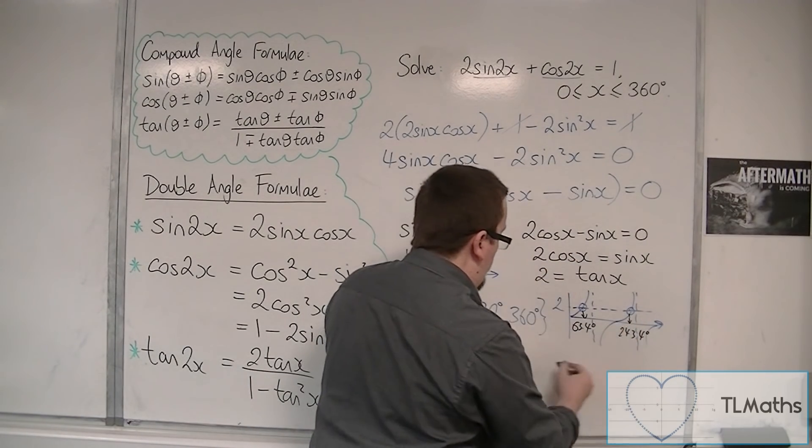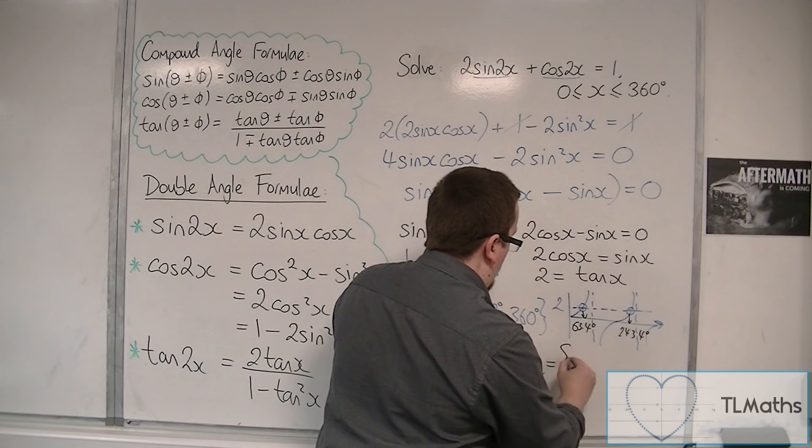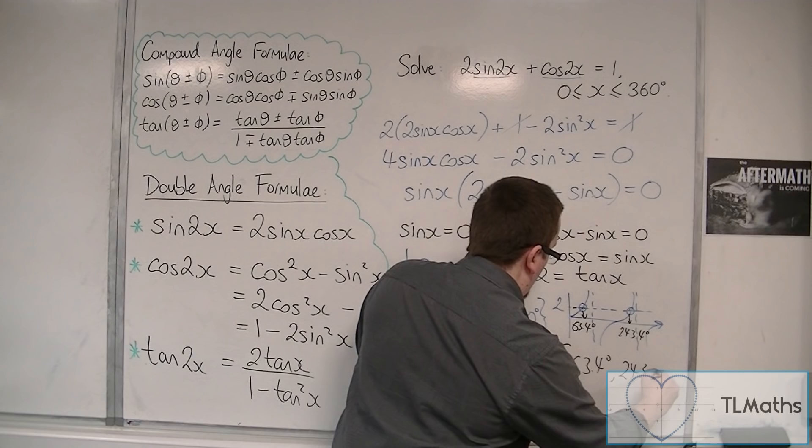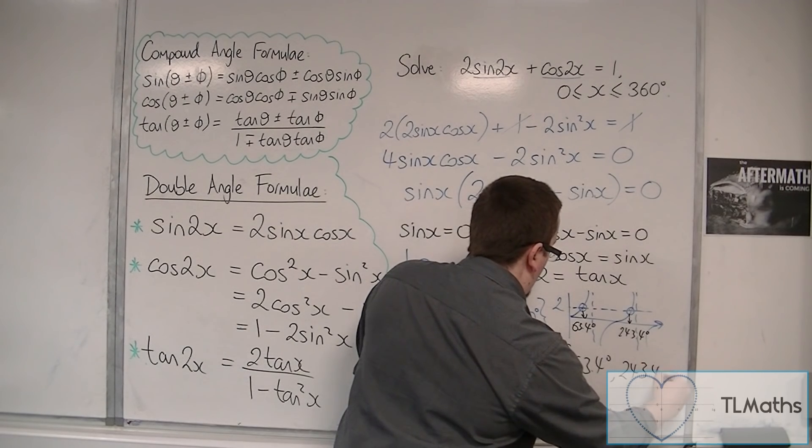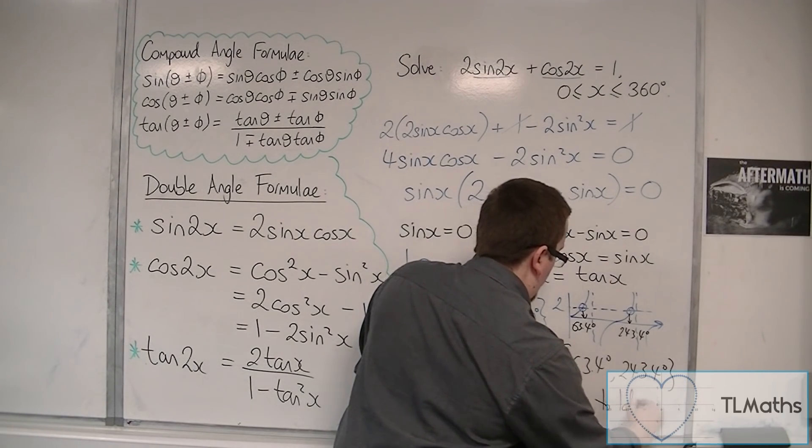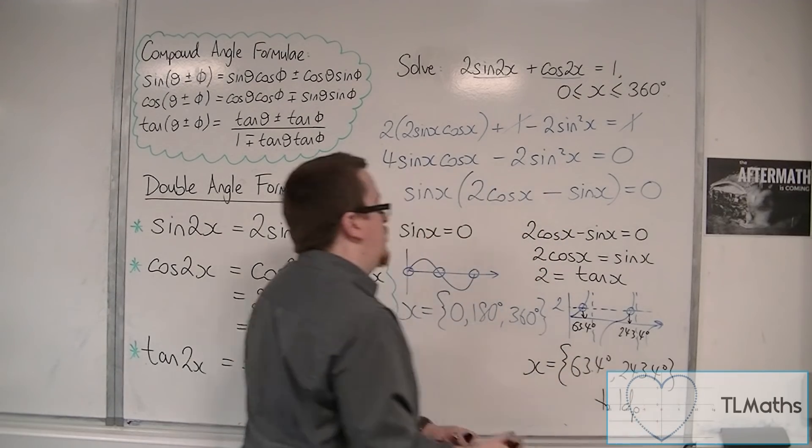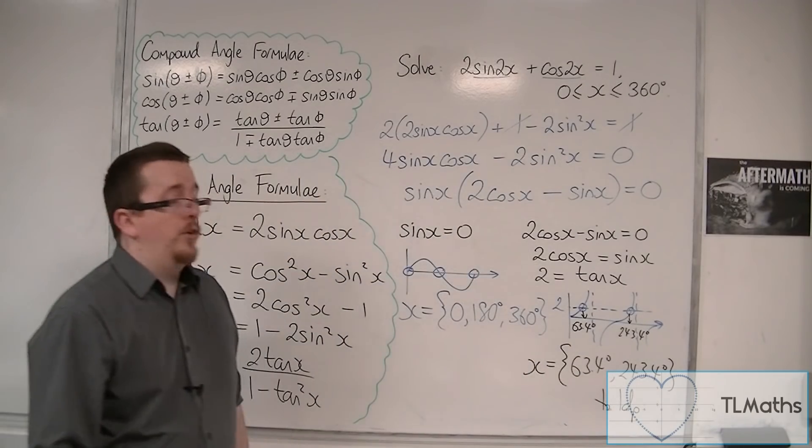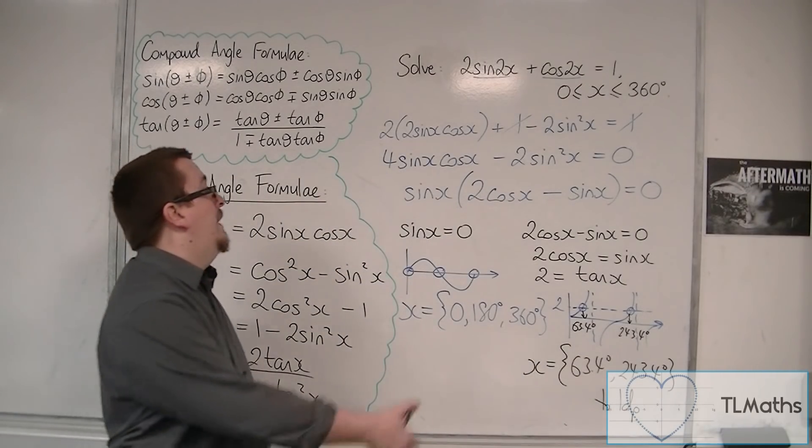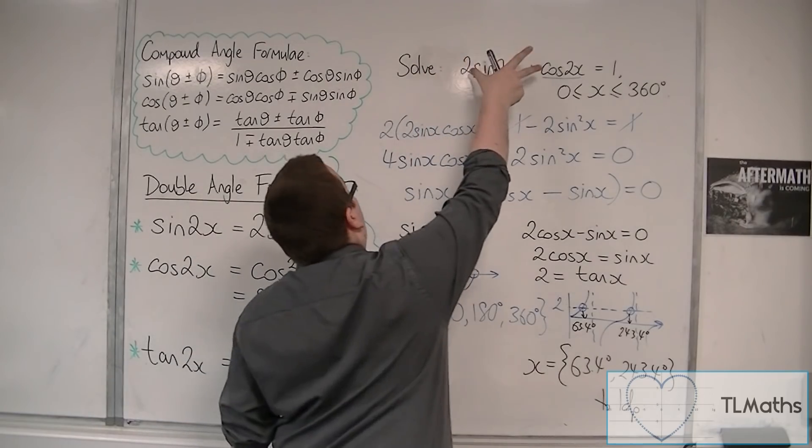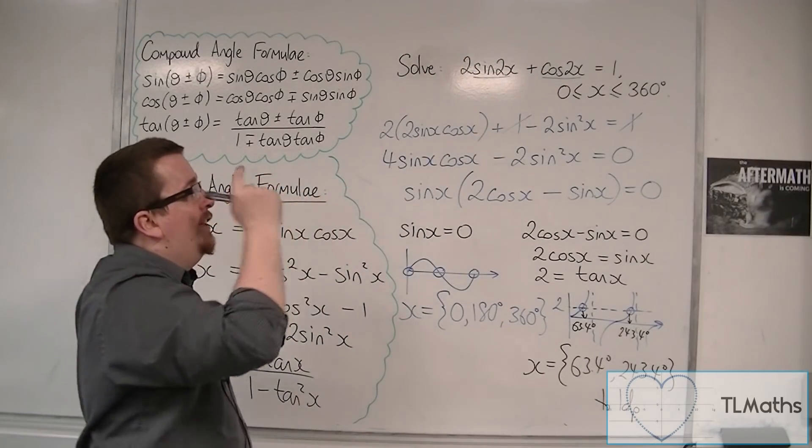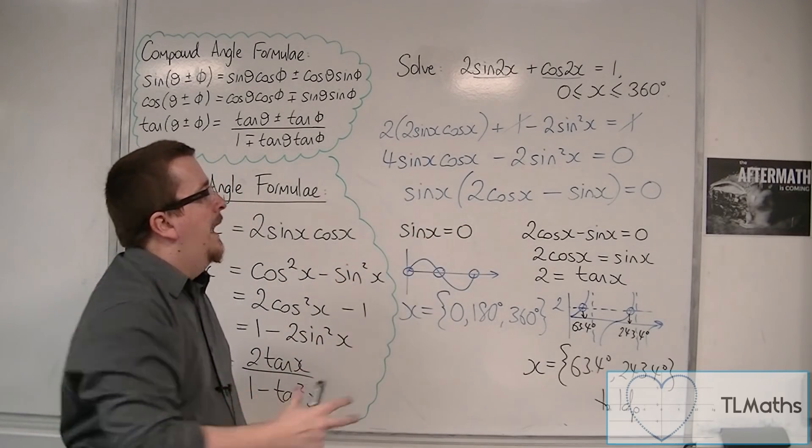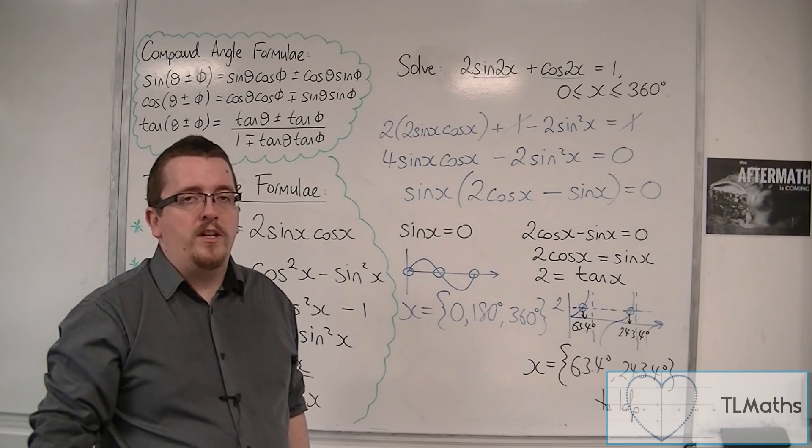And so, we're getting two solutions from this equation. So, actually, there are five solutions: one, two, three, four, five. Five solutions all together. And this is how we can go from a complicated looking trig equation, use the trig identities to simplify it down and factorize, and then solve two straightforward trig equations.